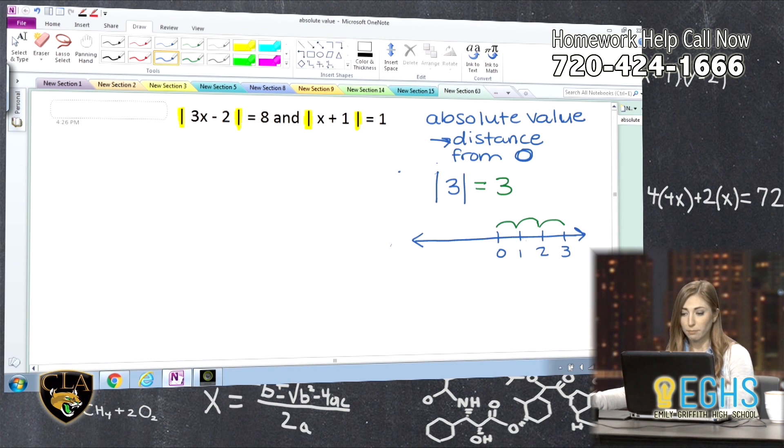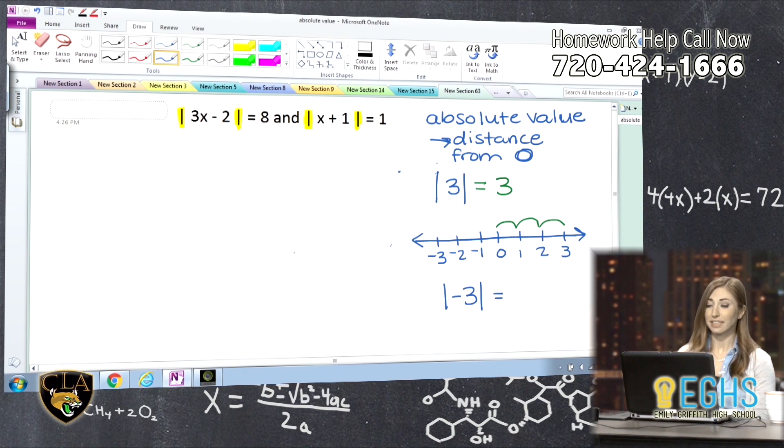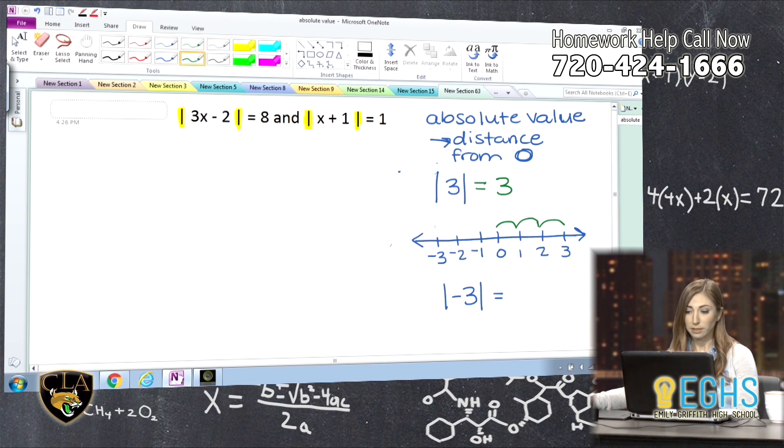Maybe sounds weird, but where this starts really making a difference is if we look at negative numbers. So let's say I were to do the absolute value of negative three. Well, what that's really asking is what is the distance of negative three from zero? So we can even look at that again and count. So one, two, three. It's three spaces away from zero. So that means the absolute value of negative three is three.